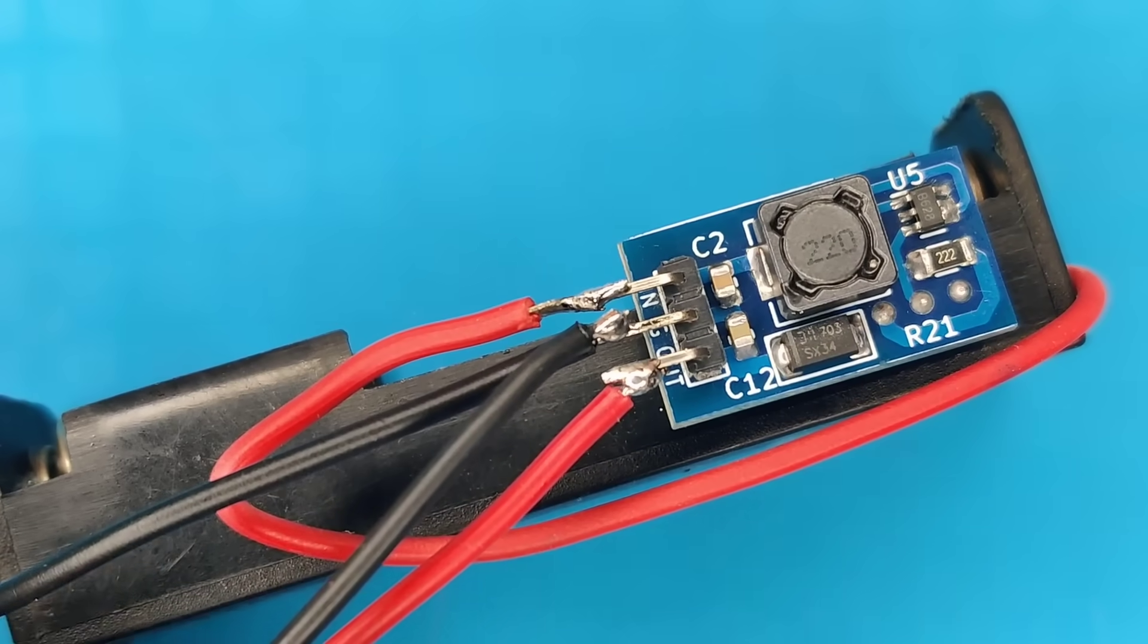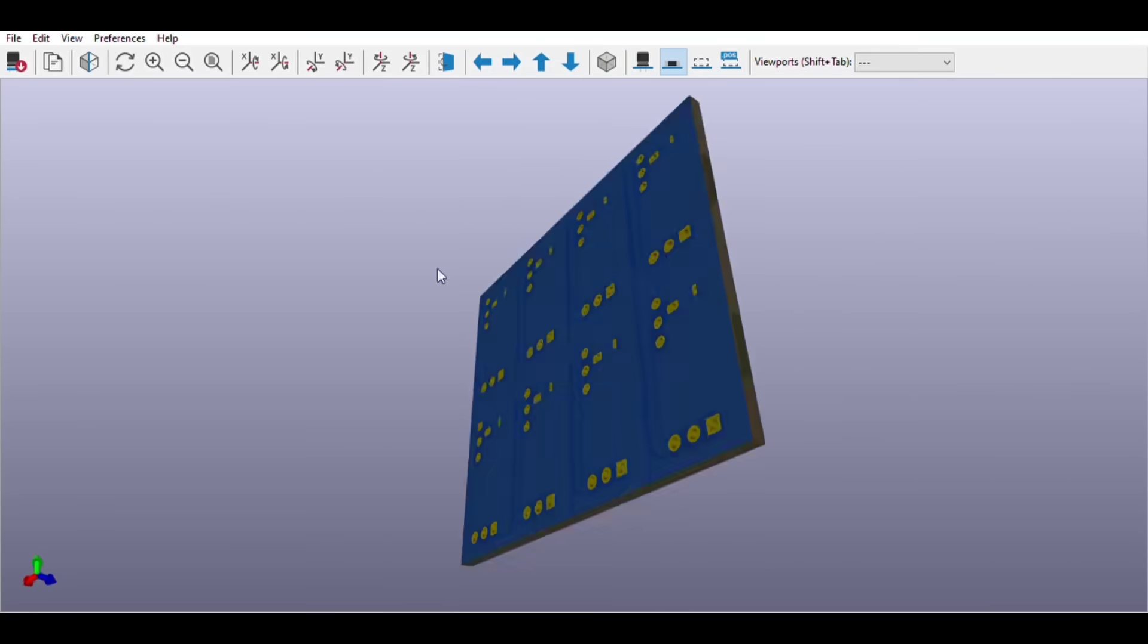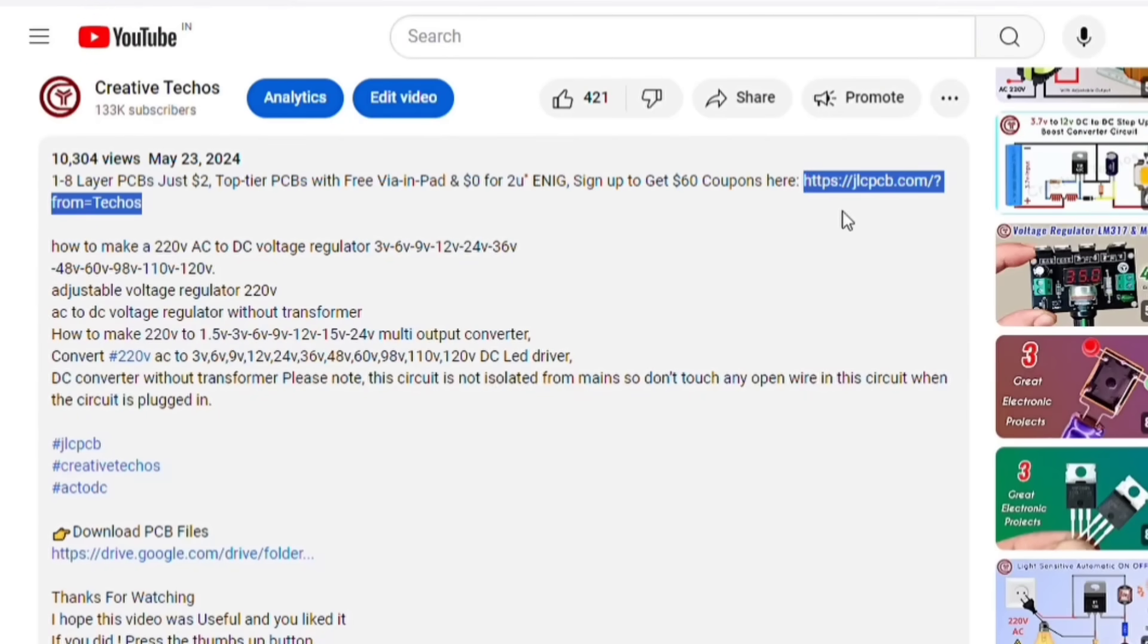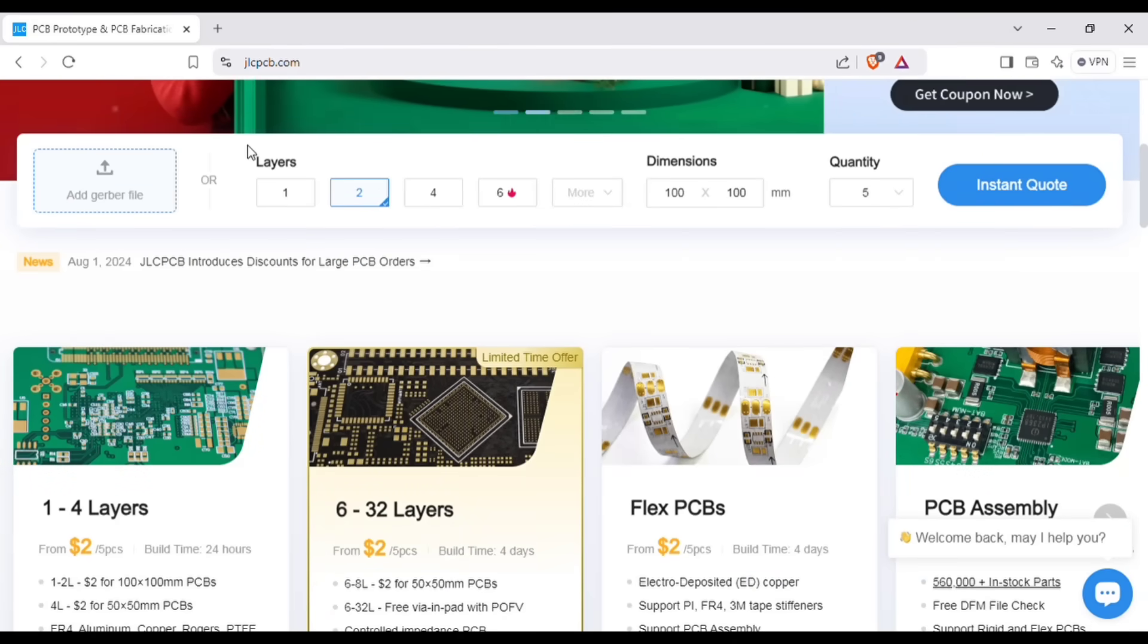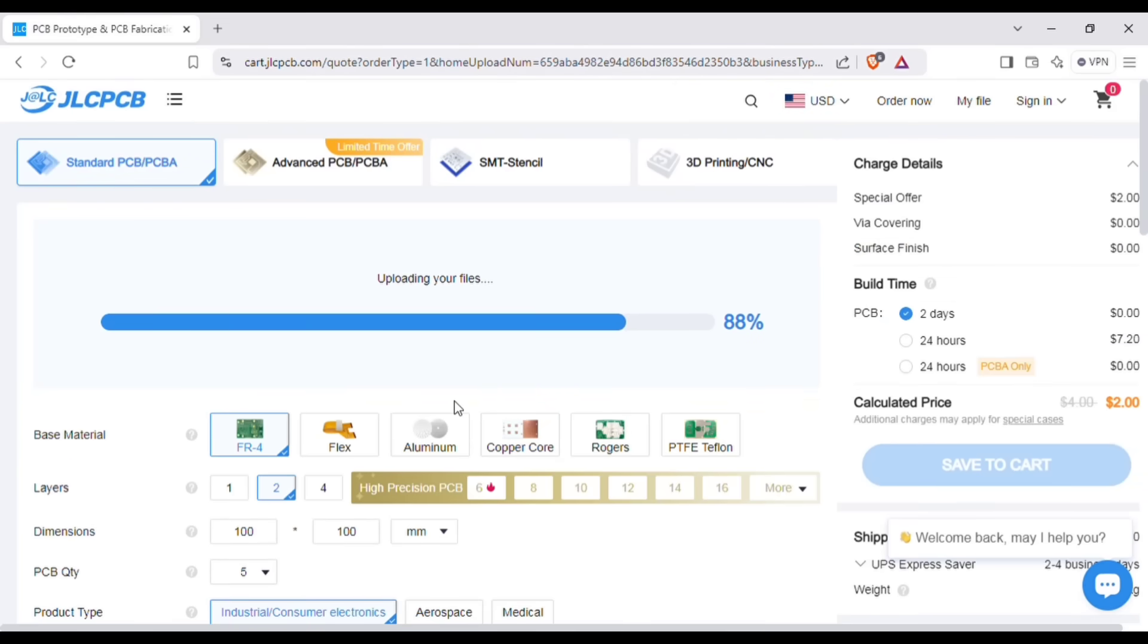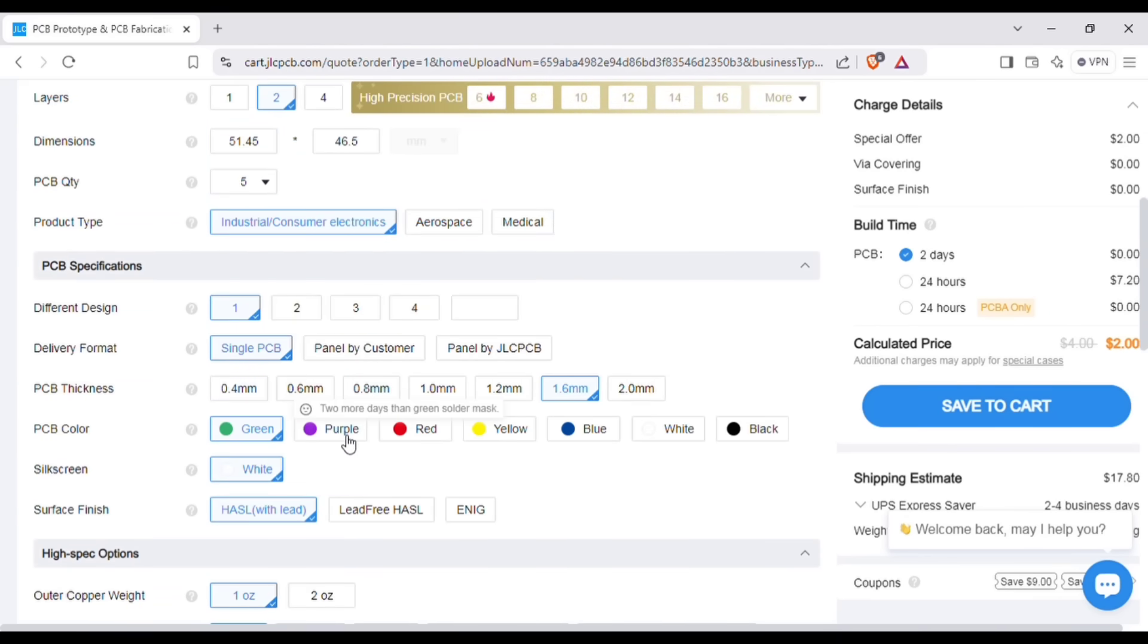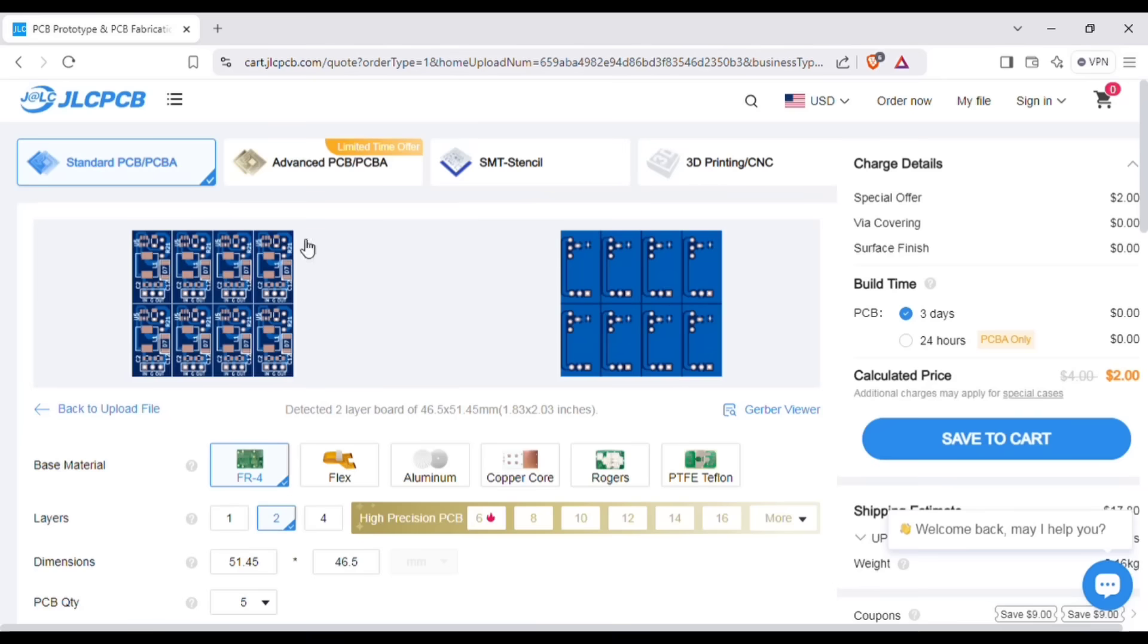Before we test our circuit, let me tell you that you can also order the same PCB for this project without messing up on perf board. Just go to the video description and with this link sign up on JLCPCB website. On the home page of JLCPCB website, here you can add the gerber file I provided. After uploading, you can see the preview of the PCB. You can also change quantity and color of the PCB as per your requirements and then save to the cart for checkout.